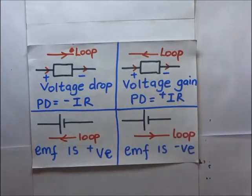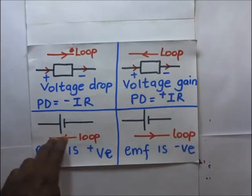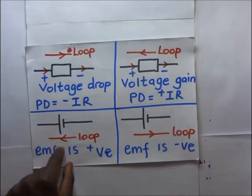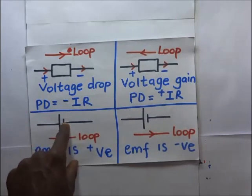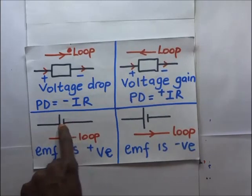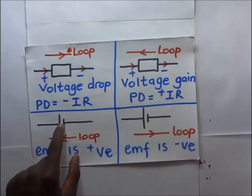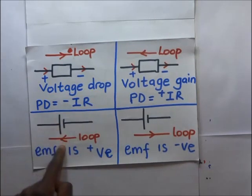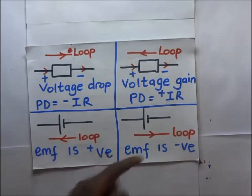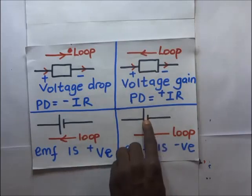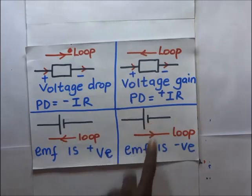Coming to our sources of EMF: the general convention is that current always moves from the positive terminal, goes through the circuit, and re-enters the cell via the negative terminal. So if the loop is coinciding with the correct direction of flow of current within the cell — which is from negative to positive inside the cell — then that EMF is positive. But if the loop is traversing in a direction opposing the normal flow of current within the cell, then the EMF in that cell will be regarded as negative.